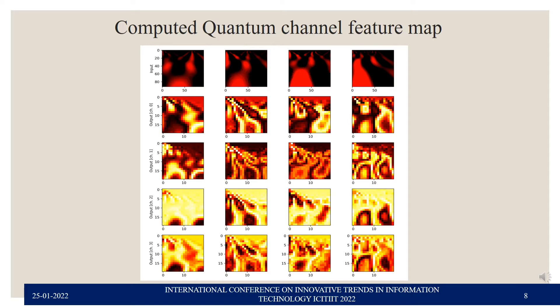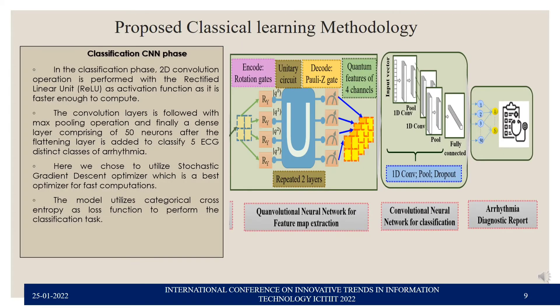This slide shows the computed quantum feature maps obtained from four different channels from the quantum node. The first row shows the scalogram images fed as input, followed by channel 0, channel 1, channel 2, and channel 3 outputs from the quantum circuit. This quantum feature map is then fed to the classical CNN, which comprises 2D convolutional operations with ReLU activation, followed by max pooling, a fully connected layer, and a dense layer with 15 neurons. A five-node classification layer finalizes the output, using SGD optimizer and categorical cross-entropy loss function.